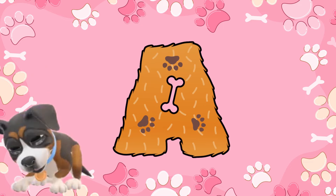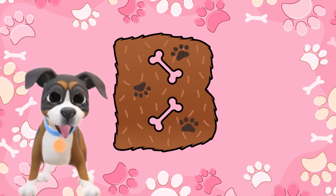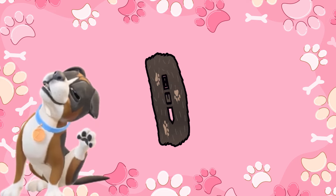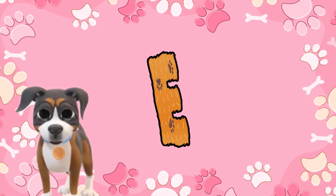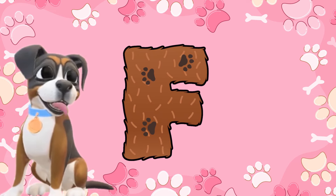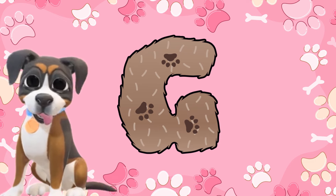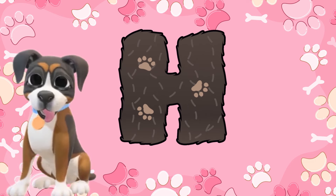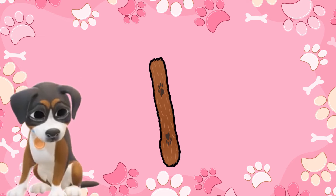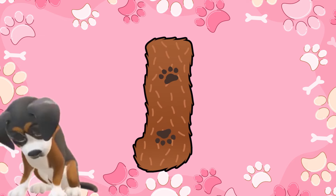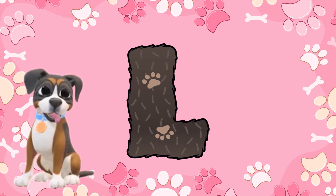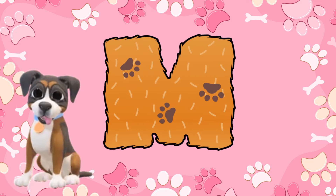A for apple. B for banana. C for cat. D for duck. E for elephant. F for fish. G for grapes. H for hen. I for ice. J for jam. K for kangaroo. L for lion. M for monkey.